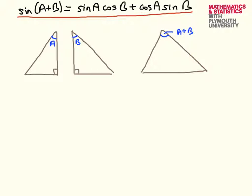To do that, I'm going to consider two right-angle triangles with angles A and B. I have scaled them deliberately in such a way that this side and this side have the same length — and that's something I can always do — and I'm going to call that little h. So these are identically long, and that means I can take this triangle and just move it so that these sides join seamlessly, and I will have a larger triangle with angle A plus B.